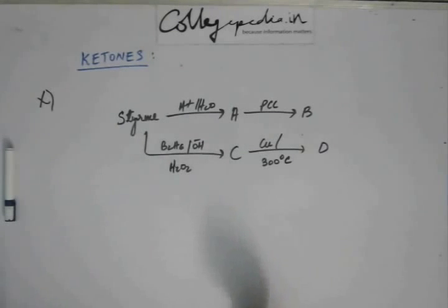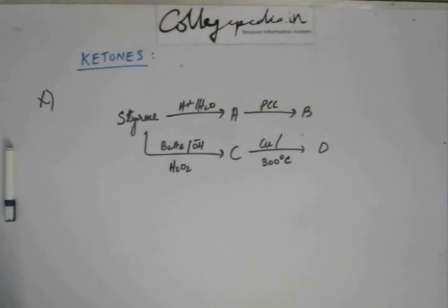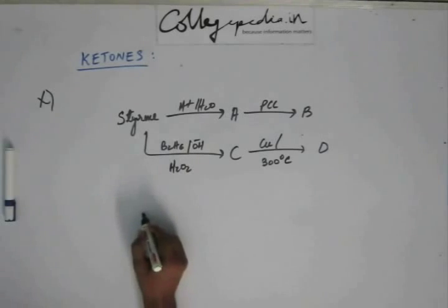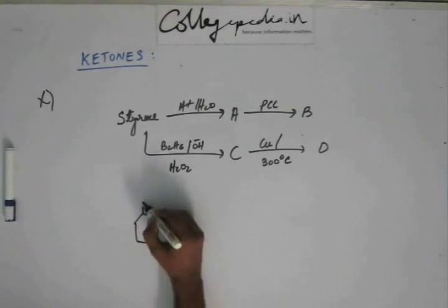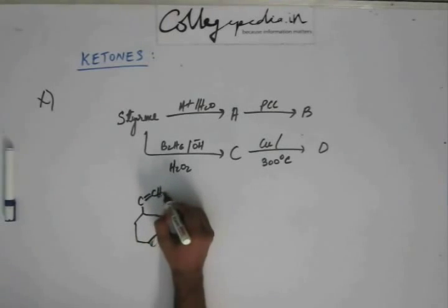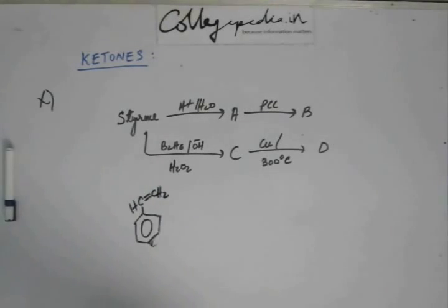This one of the reaction is from the chapter of hydrocarbon, and these two reactions, the one giving A and the one giving C, we studied in this chapter in the reaction of alkene in the chapter hydrocarbon. So quickly tell me what's A, B, C, and D. This reaction is, first of all, styrene. What is styrene? Styrene is this—there's an ethenyl molecule sitting on top of a benzene ring. This is styrene.